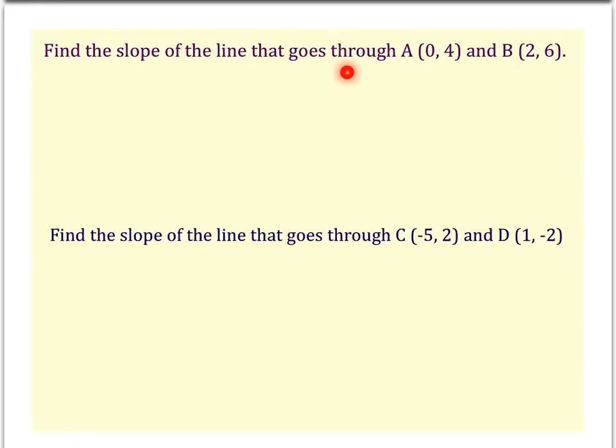To find the slope of a line that goes through two points, for example point A (0,4) and B (2,6), you have two options. You could graph these two points and count out the slope, but if you don't have graph paper and don't really like to draw, use the slope formula which you have learned about in a previous slide.